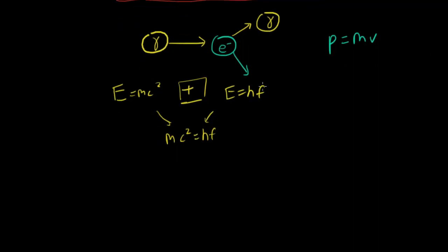We can find out a photon's theoretical mass by rearranging. Let's bring the c squared down and we have m equals hf over c squared. Now we know a photon doesn't have mass, but if we wanted to find a photon's theoretical mass, this would be the equation for it.